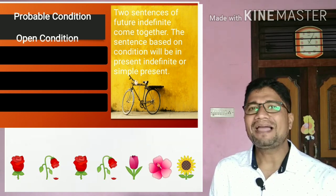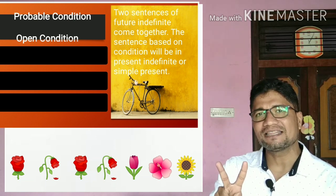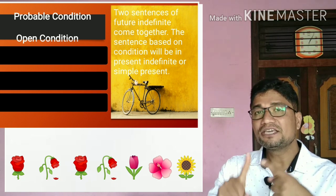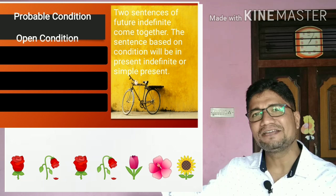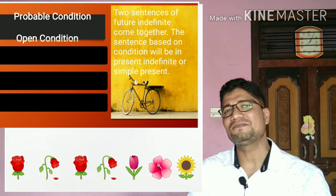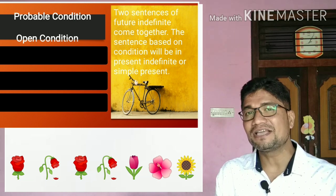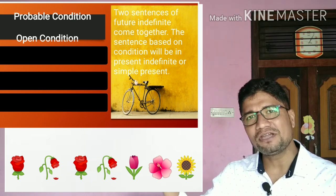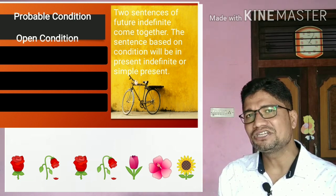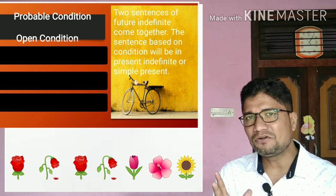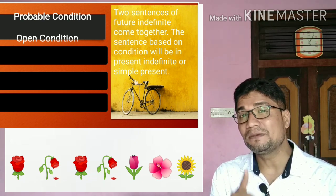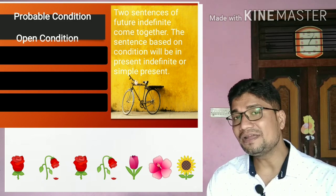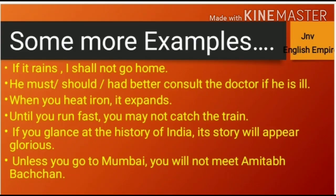So here you have learned two things: when two future indefinite sentences come together, the one based on the condition is made in present indefinite. The other one stays in future indefinite. But if the second sentence — not based on condition — is an imperative sentence, it stays imperative. And the third case: when the condition relates to a fact or universal truth, that sentence also stays in present indefinite, not future indefinite, even though it is your second sentence.